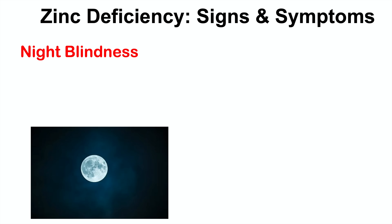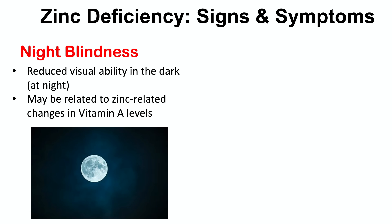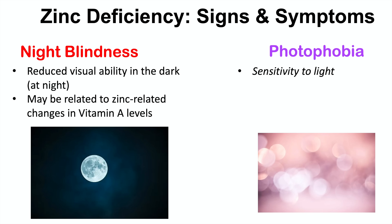Night blindness — reduced visual ability in the dark or at night — can also occur with zinc deficiency. This may be related to zinc-related changes in vitamin A levels; vitamin A is required for night vision, and a zinc deficiency can often be accompanied by a vitamin A deficiency. Photophobia, a sensitivity to light, can also occur with zinc deficiency and may be related to abnormal light adaptation.